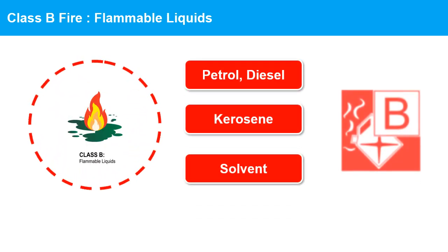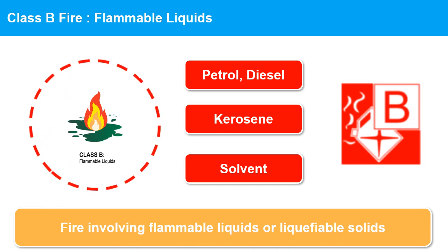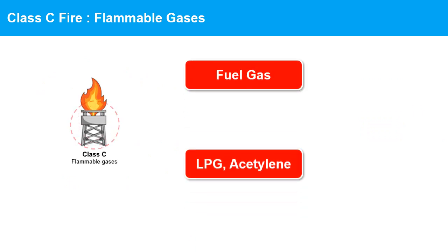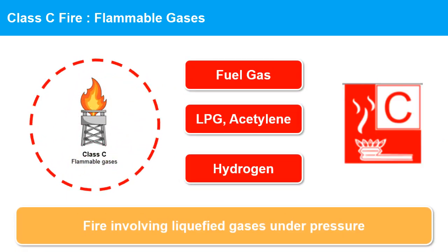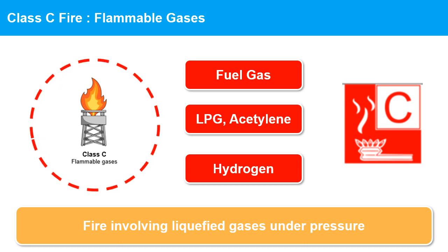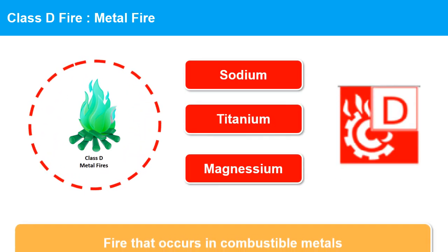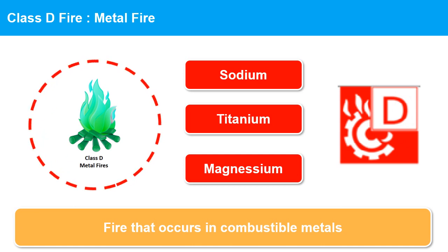Class B fires are fires that involve flammable liquids such as gasoline, oil, paint, and solvents. Class C fires are fires that involve liquefied gases under pressure such as LPG and acetylene. Class D fires are fires that involve combustible metals such as magnesium, titanium, potassium, and sodium.